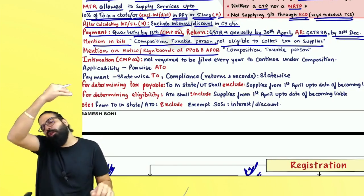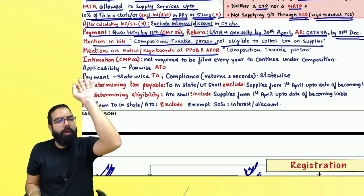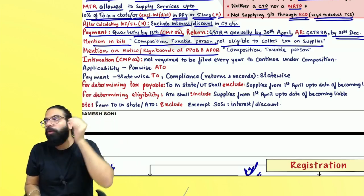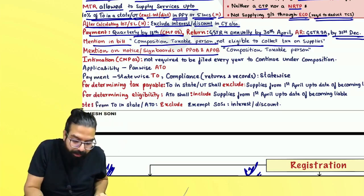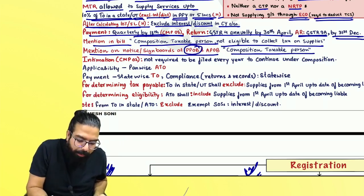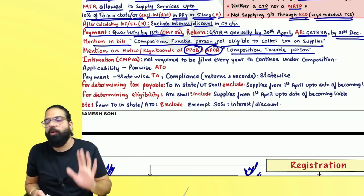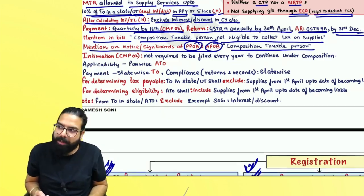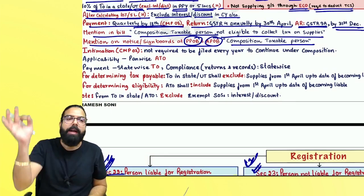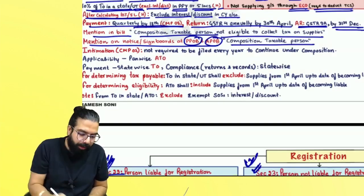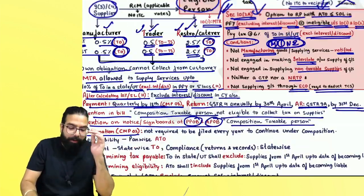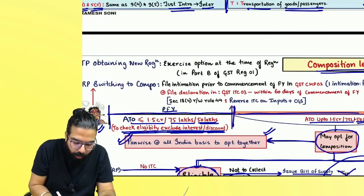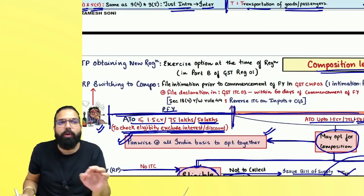When you are a composition dealer, on your bill you should always mention: 'I am a composition taxable person and I am not eligible to collect tax on my supplies.' Also, on your notice board or sign board at your principal place or additional place of business, you should write: 'I am a composition taxable person.'